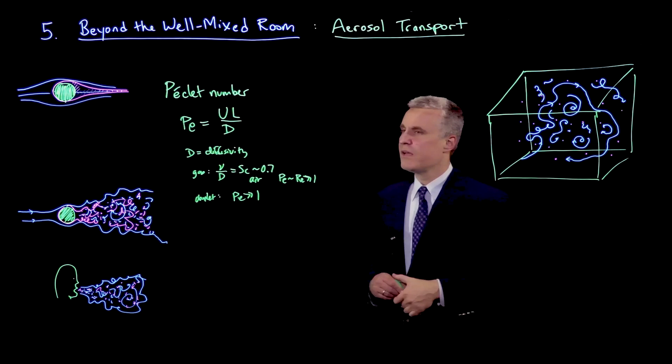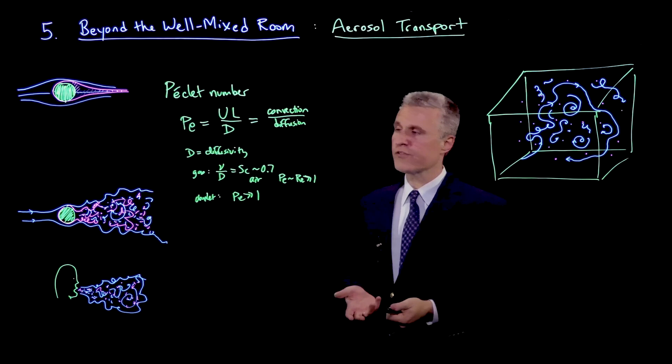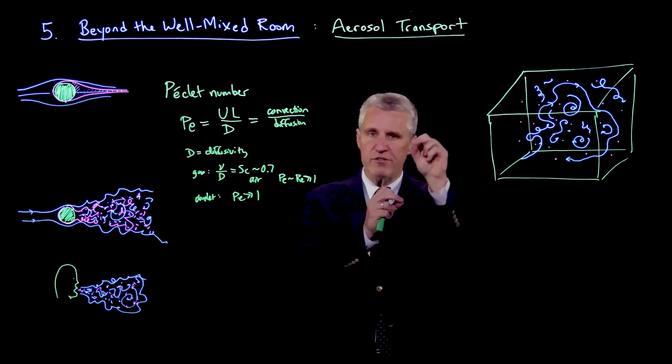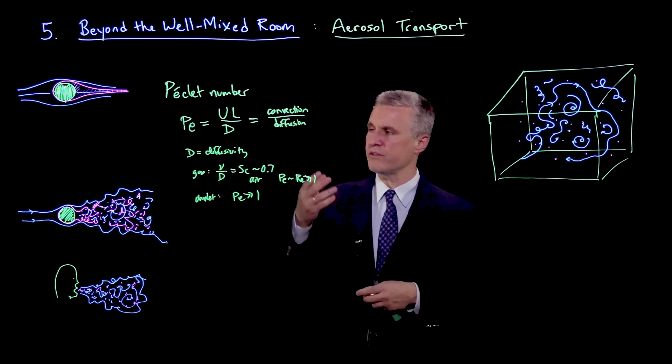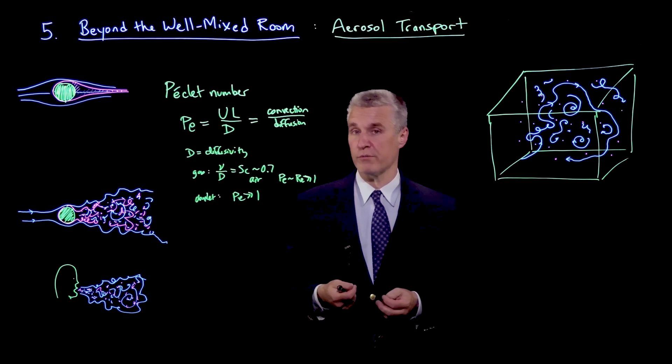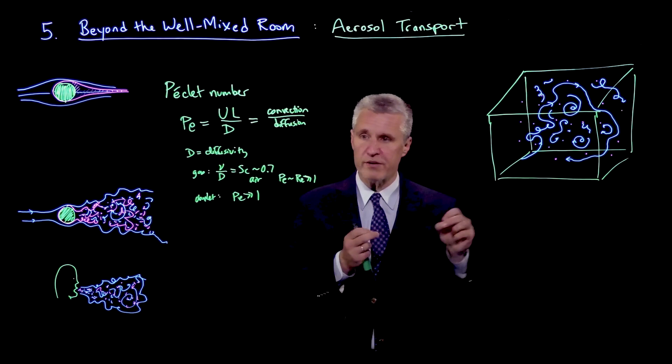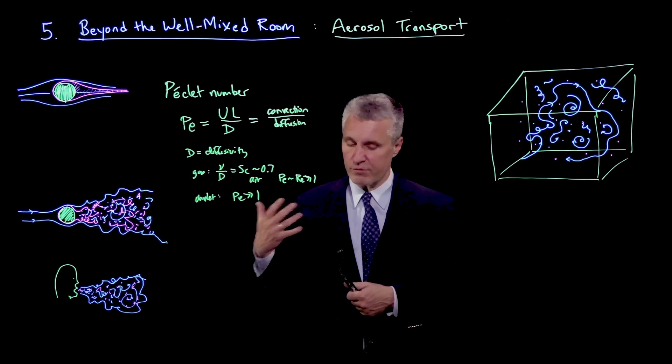Now because the Peclet number is large, the Peclet number is measuring the importance of convective transport to diffusion. And so we have a dominance of convection over diffusive process. Think of our aerosol droplets. They do diffuse in the air, and we could calculate that with the same Stokes-Einstein formula that we've used earlier. But that diffusion rate is very slow compared to the convective processes occurring in the room. So we typically have a high Peclet number. On the other hand, we're also in the regime of high Reynolds number, and that really changes things because